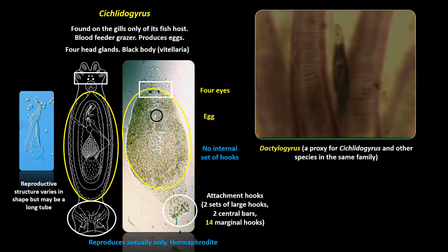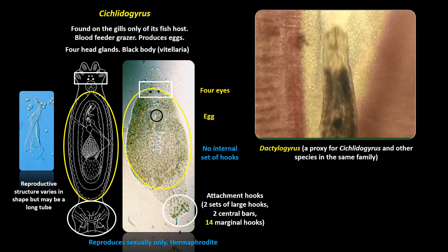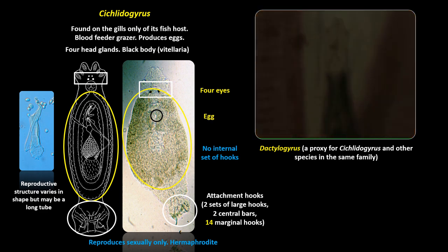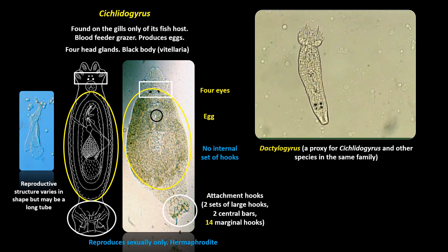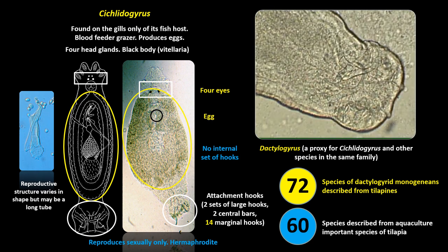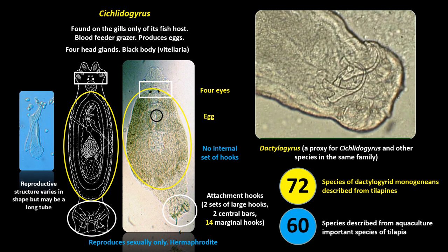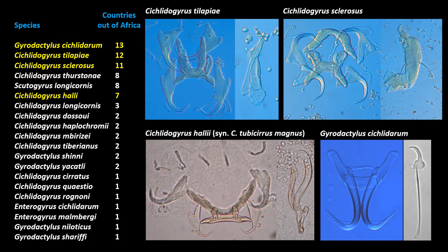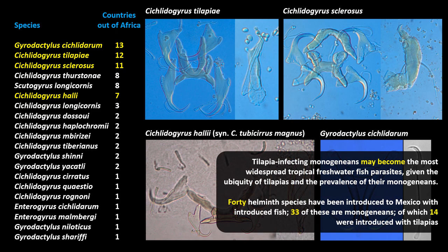Another species is Cichlidogyrus. It lives on the gills and is a blood feeder with four eyes and a black body. These species produce eggs rather than live young and attach using two sets of large hooks, two connecting bars and 14 small marginal hooks — the shape of which is used to identify species. Cichlidogyrus is a very important genus; we know about 72 different species on tilapines, and about 60 species are known from important aquaculture tilapia. Gyrodactylus cyclodarum has already been reported from 13 countries outside Africa, followed closely by Cichlidogyrus tilapii and Cichlidogyrus sclerosus. Tilapia-infecting monogenians may become the most widespread tropical freshwater fish parasites given the global distribution of tilapias.